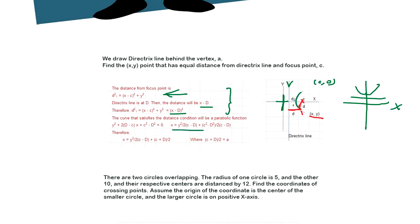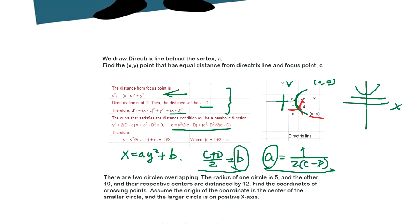The curve that satisfies the distance condition will be a parabolic function. So if you set this condition equal to one, then it's going to be this equation: x = ay² + b, and here (c + d)/2 is b, and a is 1/(2(c - d)).